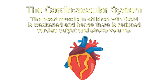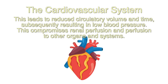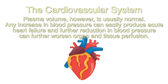Regarding the cardiovascular system: the heart muscle in children with severe acute malnutrition is weakened, resulting in reduced cardiac output and stroke volume. This leads to reduced circulatory volume, subsequently resulting in low blood pressure, which compromises renal perfusion and perfusion to other organs. Plasma volume however is usually normal. Any increase in blood pressure can easily produce acute heart failure, and further reduction in blood pressure can worsen organ and tissue perfusion.